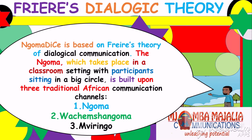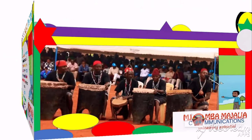Ngoma Diche is based on Freire's theory where the teacher is also a learner and they co-create with the learner. In this case, Ngoma takes place in a classroom setting with participants sitting in a big circle, and it is built upon three traditional African communication channels: first, Ngoma Diche; second, Wachemshangoma Diche; and third, Viringo.